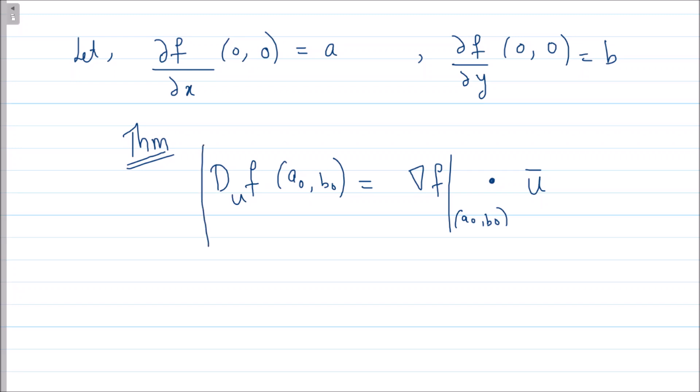I am going to use this theorem to solve this problem. Let us go one by one. In this case, our (a₀, b₀) is given to be the point (0, 0). So what is gradient of f? It is ∂f/∂x at (0,0), which I don't know, and ∂f/∂y at (0,0), which I am calling a and b for simplicity.